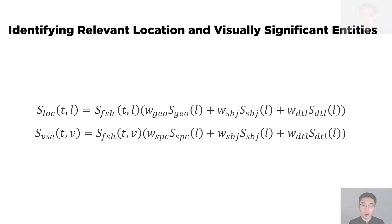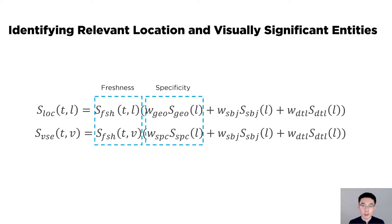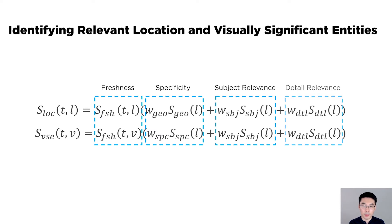The core of CrossCast is the heuristics-based algorithms that score the relevance of locations and visually significant entities based on four factors: freshness, specificity, subject relevance, and detail relevance.